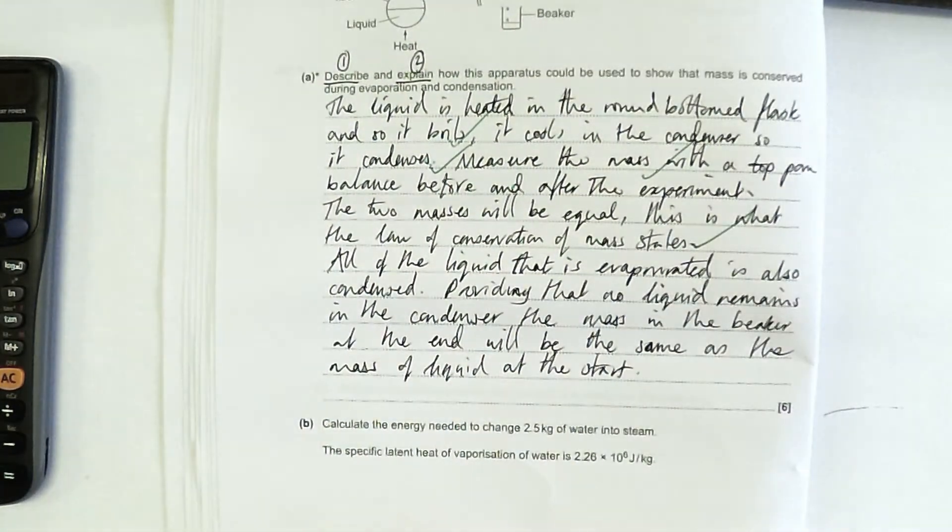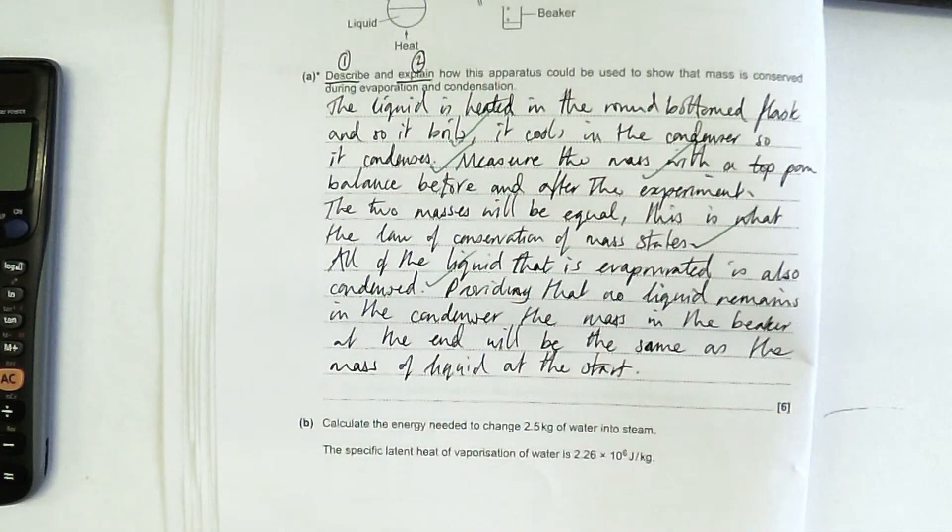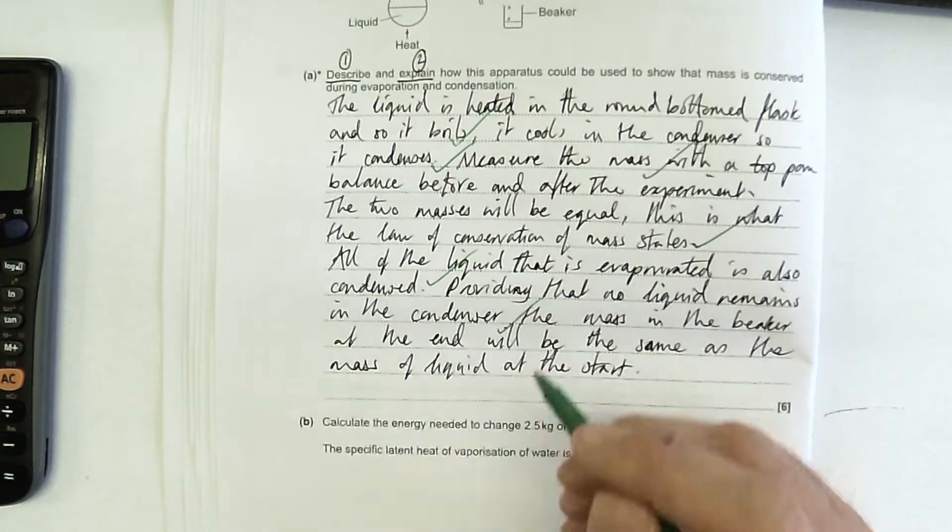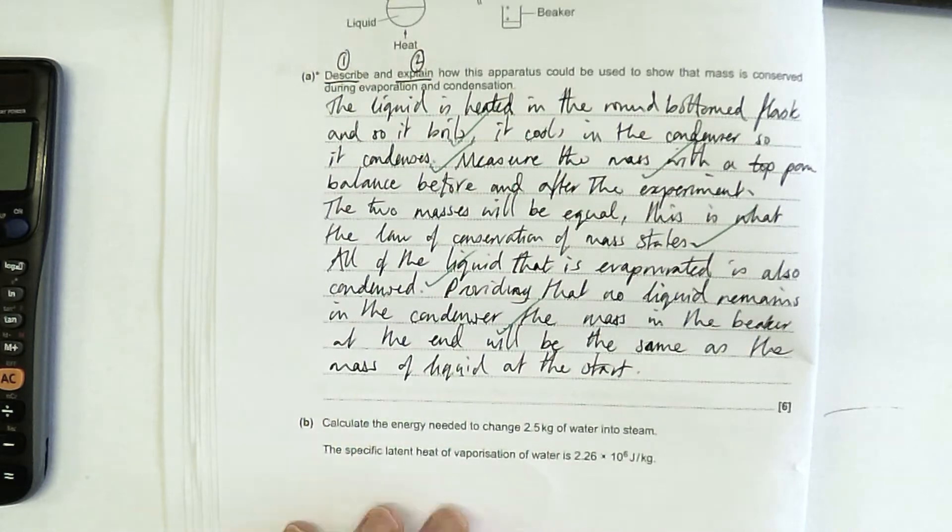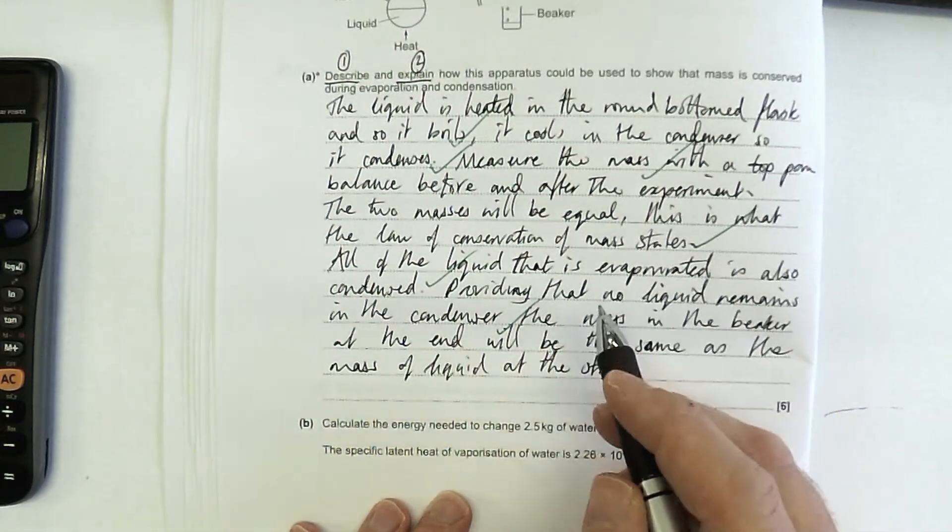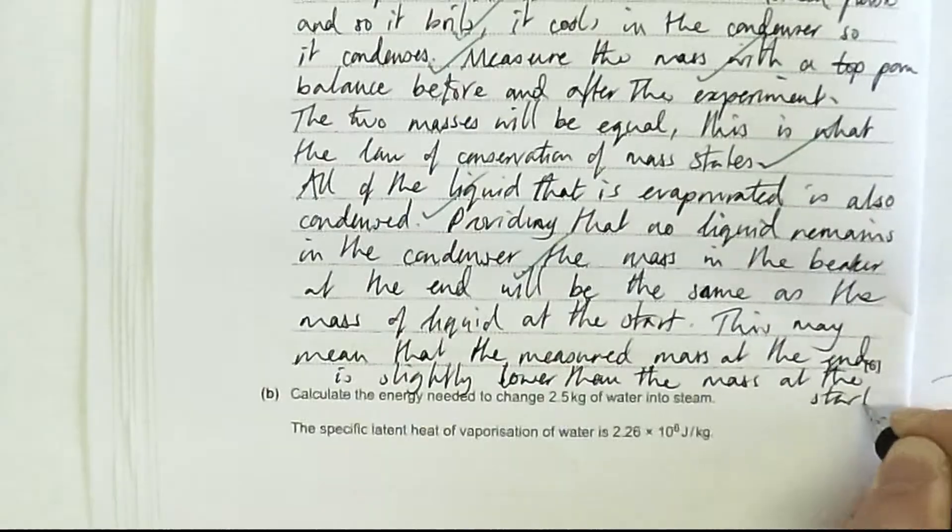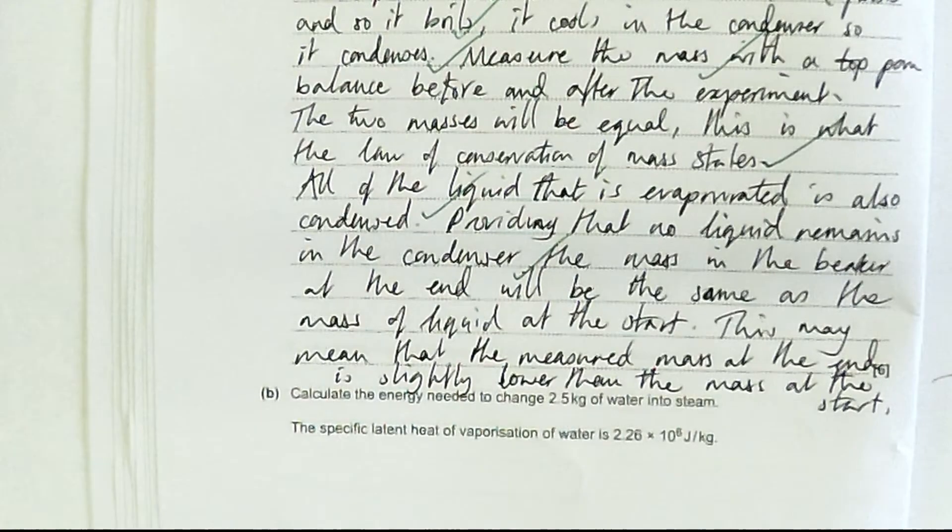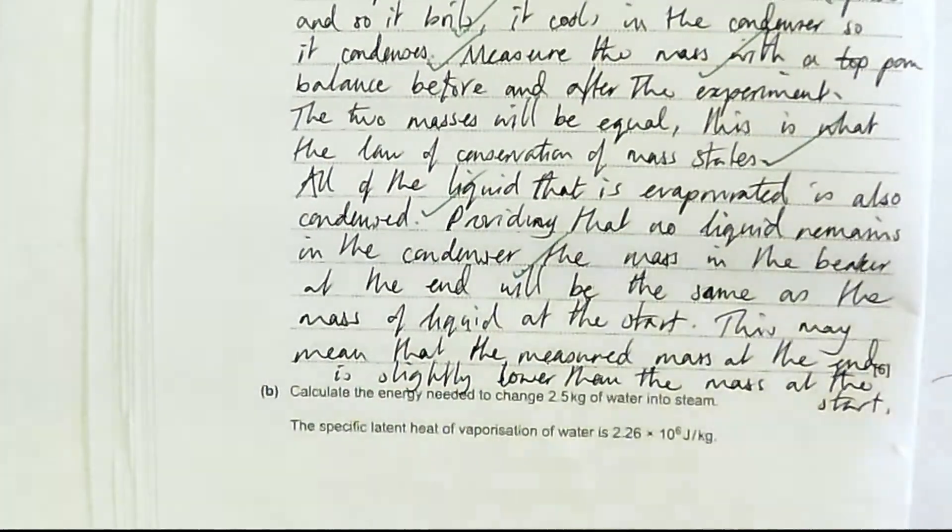All of the liquid that is evaporated was also condensed. Now I'm explaining. Providing that no liquid remains in the condenser, the mass in the beaker at the end will be the same as the mass of the liquid at the start. I might just add to cover myself that this may mean the measured mass at the end is slightly lower than the measured mass at the start. I've written a bit more, but don't worry because as examiners we will find those extra bits.